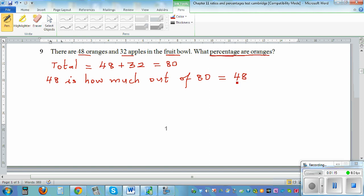This is 48 out of 80. As I want to write out of as a percent, I have to write out of 100. So if we halve it, half of 48 is 24 out of 40. Let's again halve it, so this is 12 out of 20, and again halve it, this is 6 out of 10.